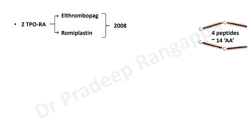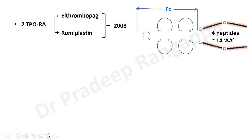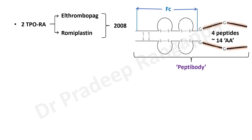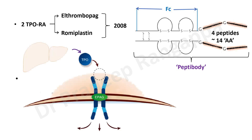Romiplostim structurally has four peptides, each containing 14 amino acids, which are attached to the Fc fragment of immunoglobulin G. These four peptides connected to the Fc component of immunoglobulin G are called a 'peptibody' because it's a peptide attached to an antibody. That is the romiplostim chemical structure.